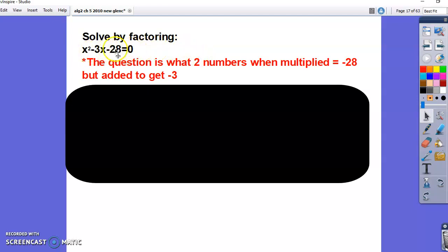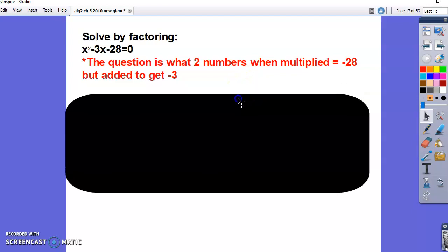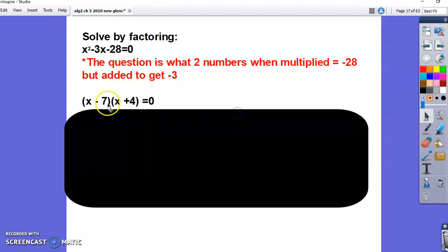So we're going to look at these numbers in the back, this negative 28, and we're looking at what two numbers when multiplied would give us negative 28, but when added together would give us a negative 3 here in the middle. The two numbers that work are negative 7 and positive 4. Use your calculator, double check it, make sure you're getting the right answer.